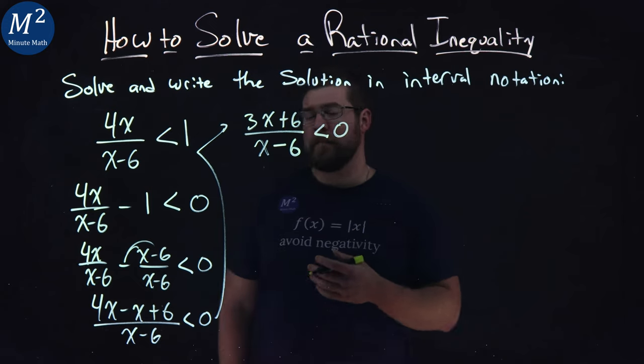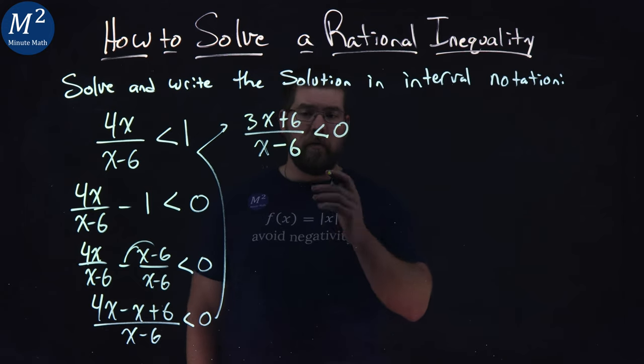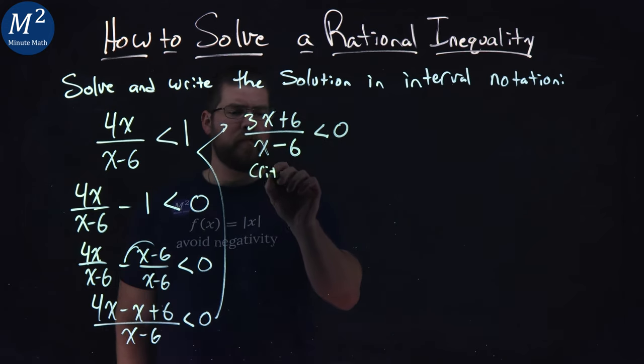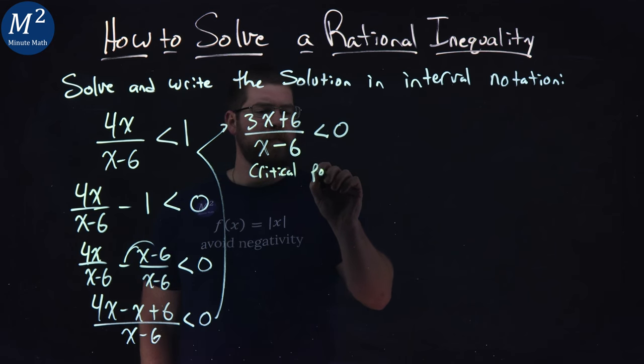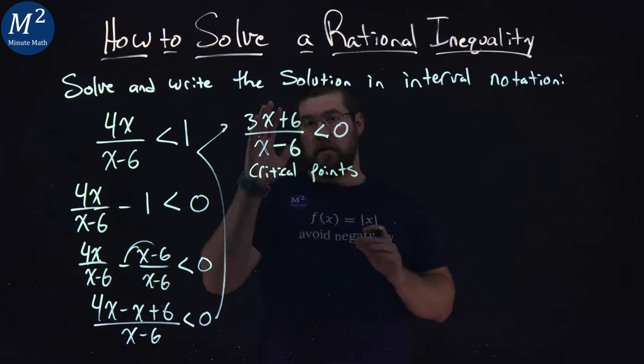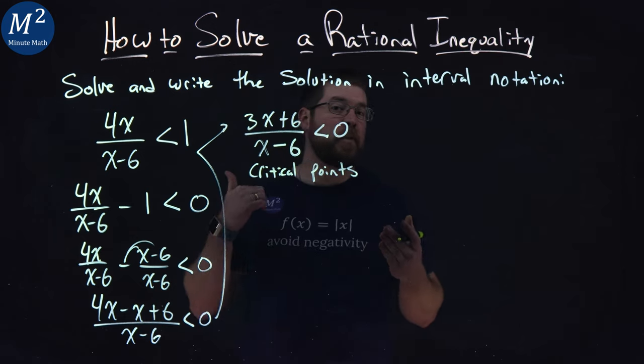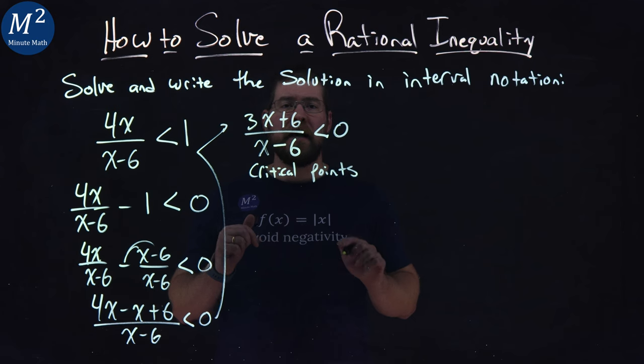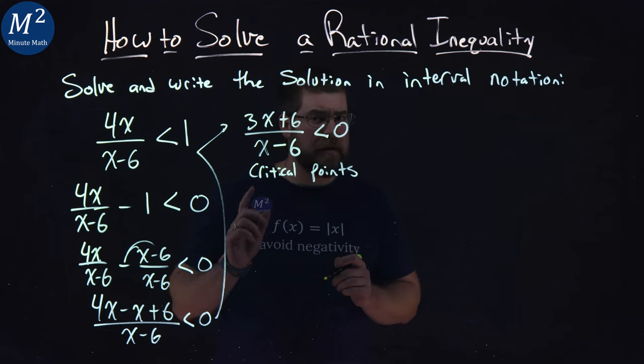From here, I want to find my critical points. And this is where our left-hand side, now that it's all by itself and 0 is on the right, our left-hand side is equal to 0 or undefined, and we want to know where the undefined part is too.